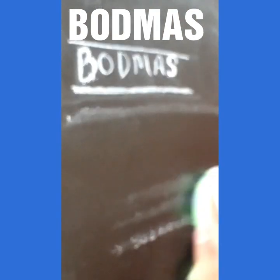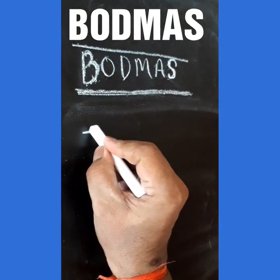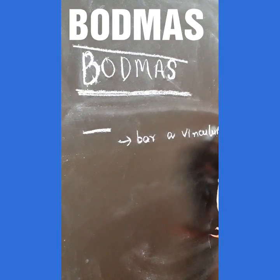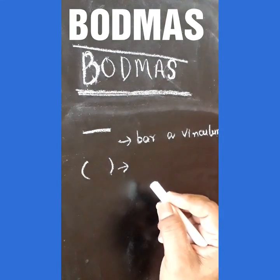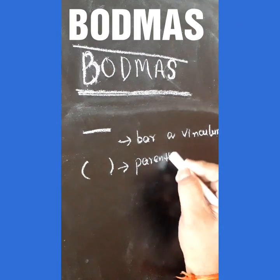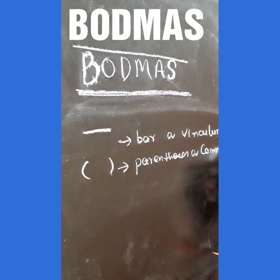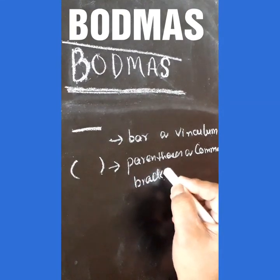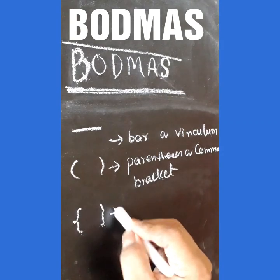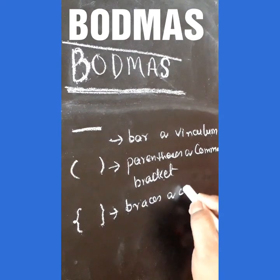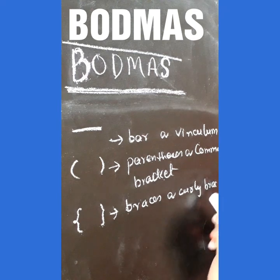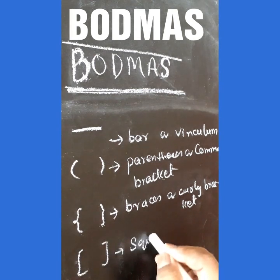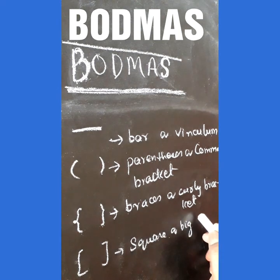Now we are going to see different grouping symbols. This bar is called bar or vinculum. This is parenthesis or common bracket. This is called braces or curly bracket. And this is called square or big bracket.